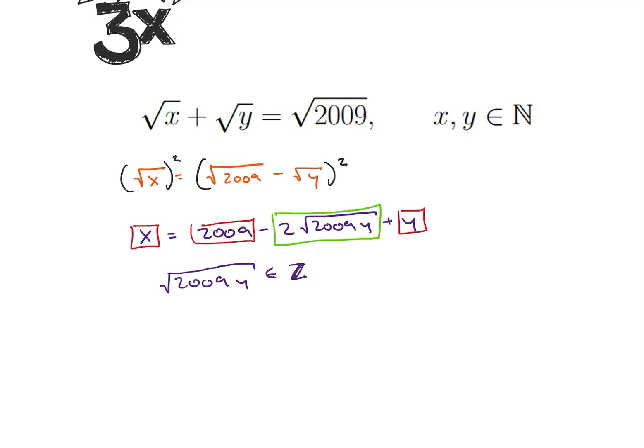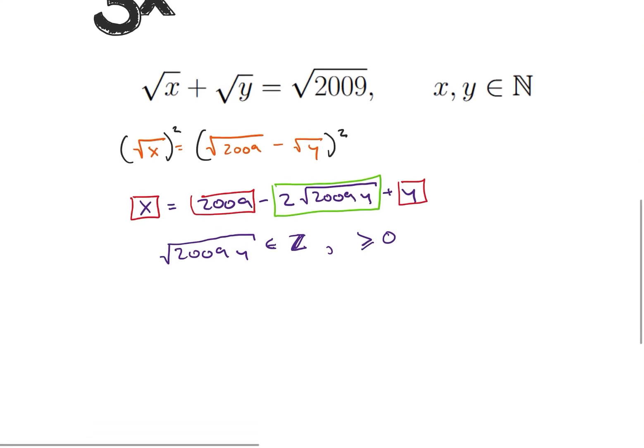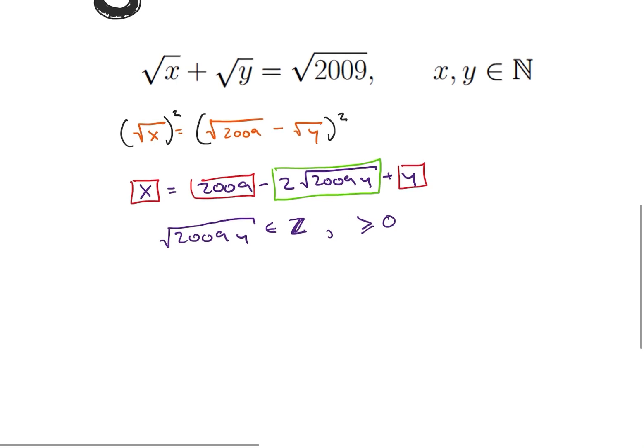So square root of 2009y is an element of the integers, and we also know that since it's a square root it's greater than or equal to zero. So let's look at this now. So what is 2009y? How is that helpful?